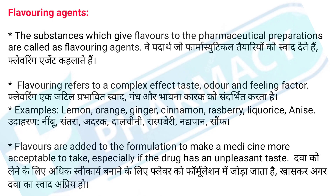Examples of flavoring agents: lemon, orange, ginger, cinnamon, raspberry, licorice, anise. Udaharan: neembu, santra, adarak, dalchini, raspberry, nadyapaan, saaf.